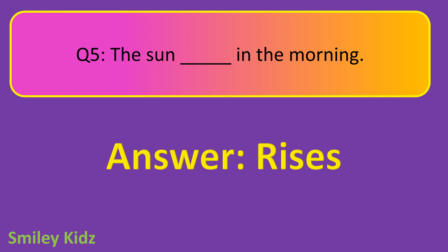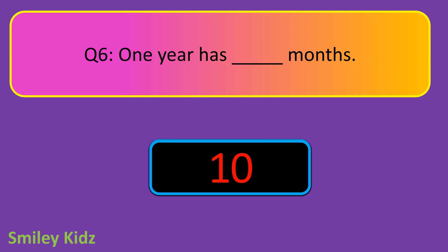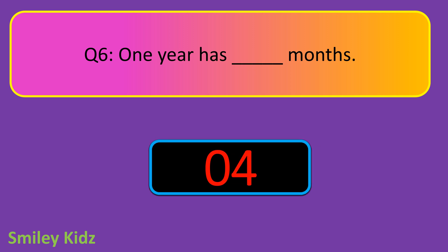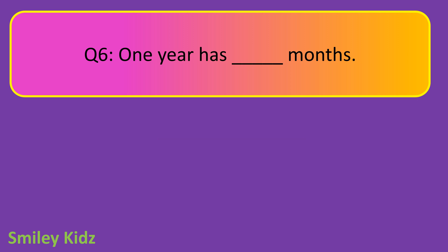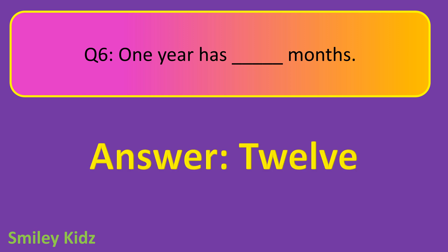Question number 6. One year has dash months. Your time starts now. And your time is up. The right answer is 12. One year has 12 months.